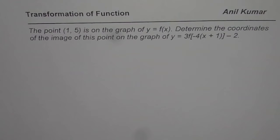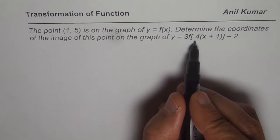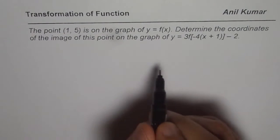I am Anil Kumar and now it is time to review transformation of functions. The question here is: the point (1,5) is on the graph of y = f(x). Determine the coordinates of the image of this point on the graph y = 3f[-4(x+1)] - 2.